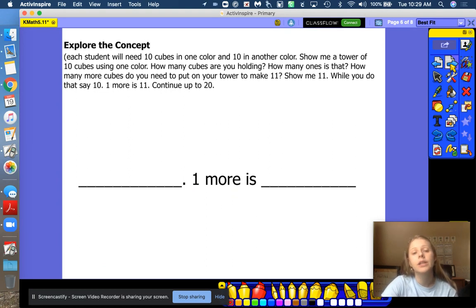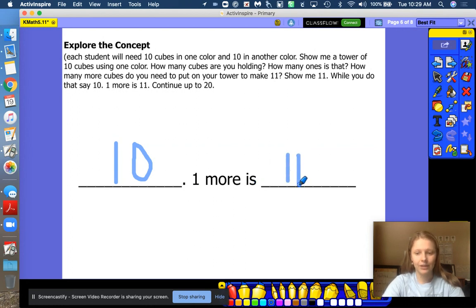All right, friends. Today we are going to use either cubes or any object that you have to count up using this sentence. We're going to actually read the sentence that we've been saying this entire time. So you already know how to do it. We're just going to read the sentence this time. All right. So 10. We're going to start with the number 10. Go ahead and flash me 10 fingers. Good. 10. One more is... Good reading. So read the sentence. 10. One more is 11.